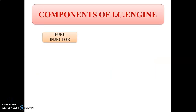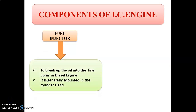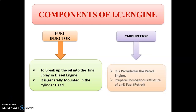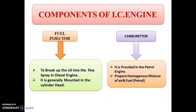The next component is the fuel injector. The fuel injector is used in the diesel engine to break up the oil into a fine spray. It is generally mounted in the cylinder head. The carburetor is provided in the petrol engine to prepare a homogeneous mixture of air and fuel. This air-fuel mixture is supplied to the engine cylinder through the suction valve or inlet port.